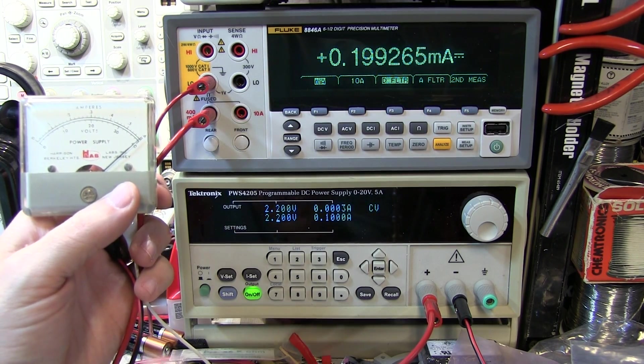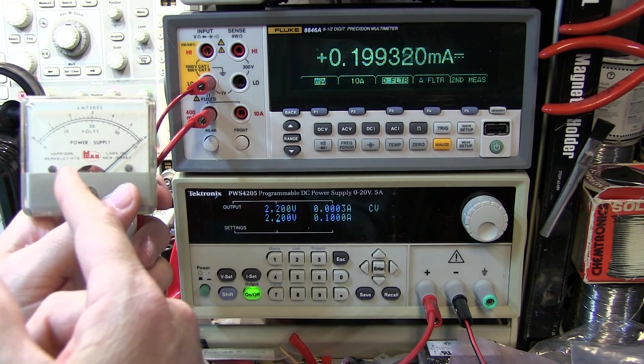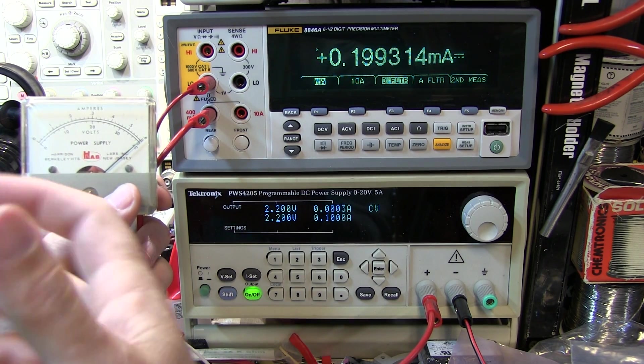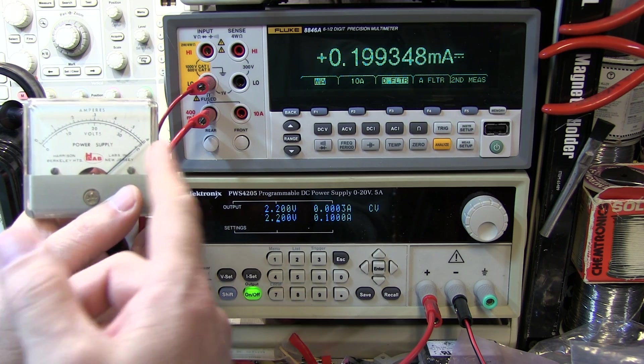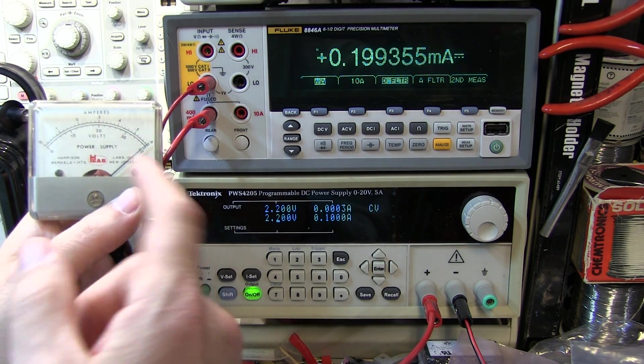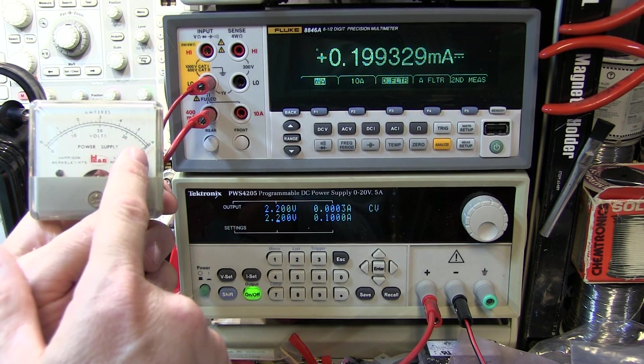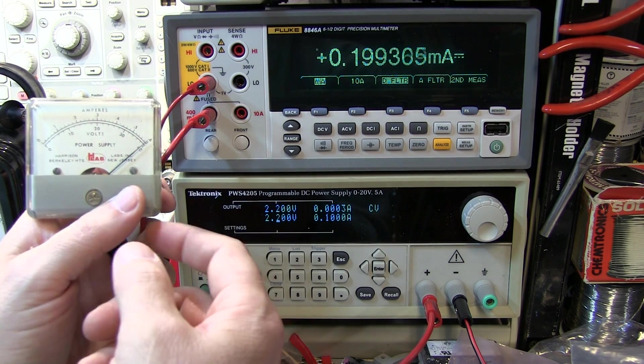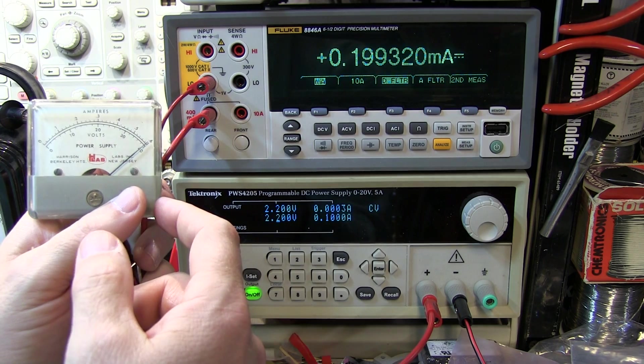So know that the full scale reading for this particular meter is 200 microamps. Now that we know that, we can then design what series resistor we need to have in place to read a certain voltage, or we might use it to measure current, or we might use it in another application. But we'll know that we'll have to design the circuit so that a full scale reading on this meter, for whatever it's going to indicate, would need 200 microamps of current.